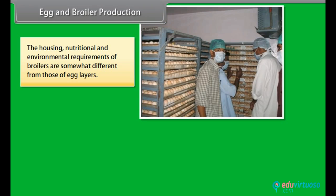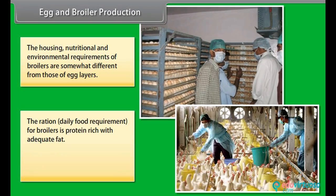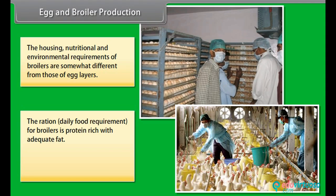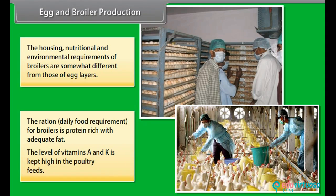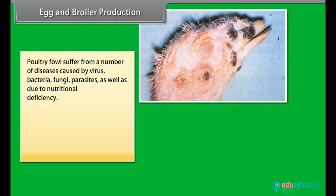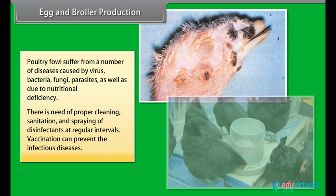The housing, nutritional and environmental requirements of broilers are somewhat different from those of egg layers. The daily food ration for broilers is protein-rich with adequate fat, and the level of vitamins A and K is kept high in the poultry feeds. Poultry fowl suffer from diseases caused by viruses, bacteria, fungi and parasites, as well as nutritional deficiency. Proper cleaning, sanitation and spraying of disinfectants at regular intervals are needed. Vaccination can prevent infectious diseases.